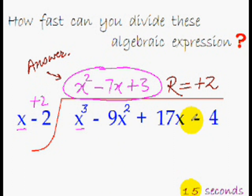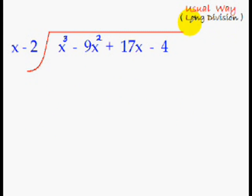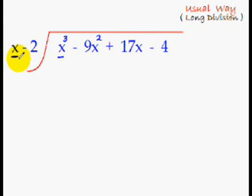Let's first see the usual way of doing algebraic division. The name of the method is long division — and as the name itself suggests, you know what to expect. You start by dividing the first term of the dividend by the first term of the divisor.